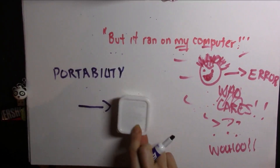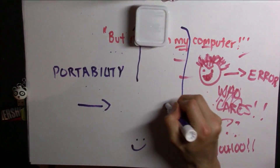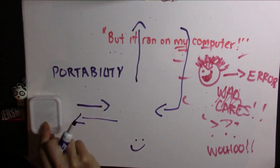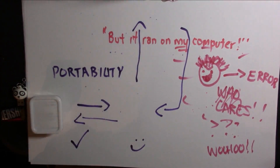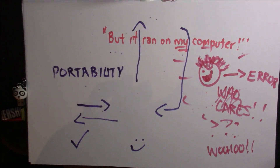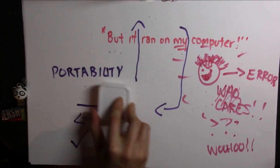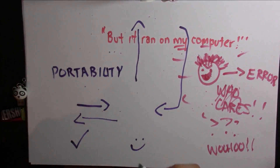The next problem that containers solve really well is portability. This is really simple. If a container is this binary, a file that can sit on my desktop, and I can send it to you on Google Drive, or attach it to an email, or just put it on a disk and hand it to you — that makes it really easy to move from one machine to another.